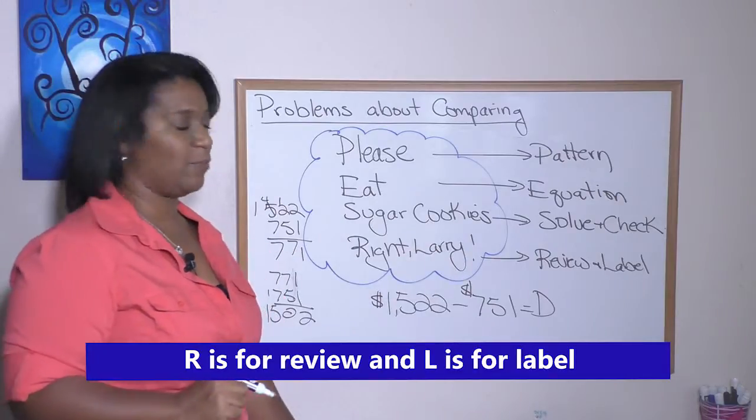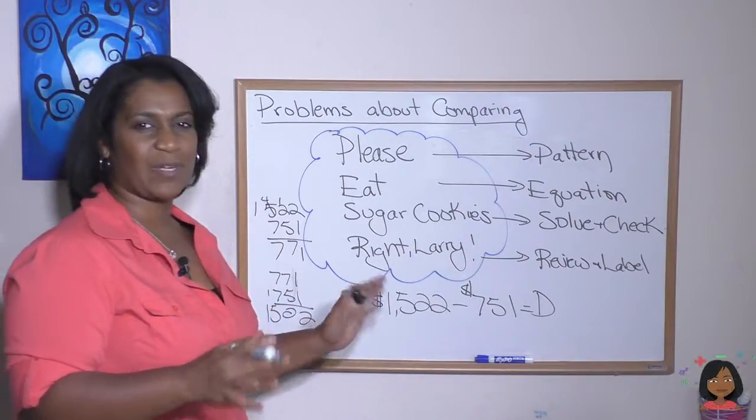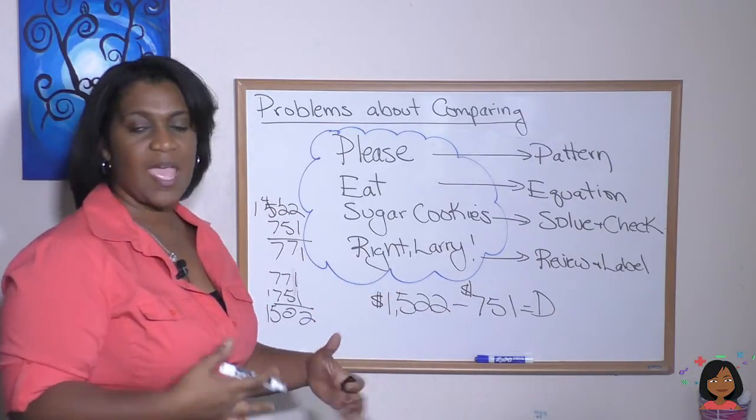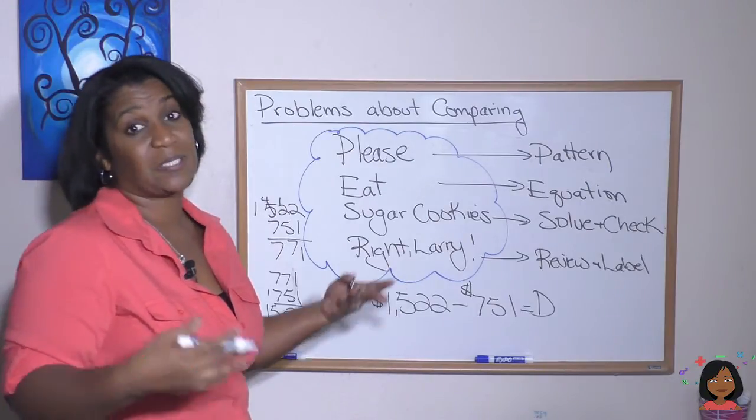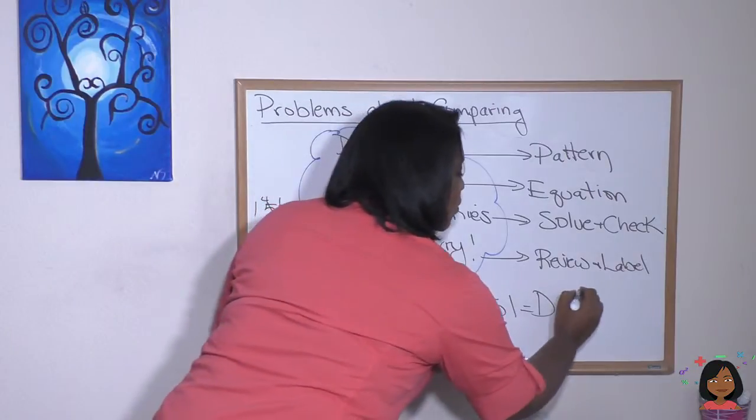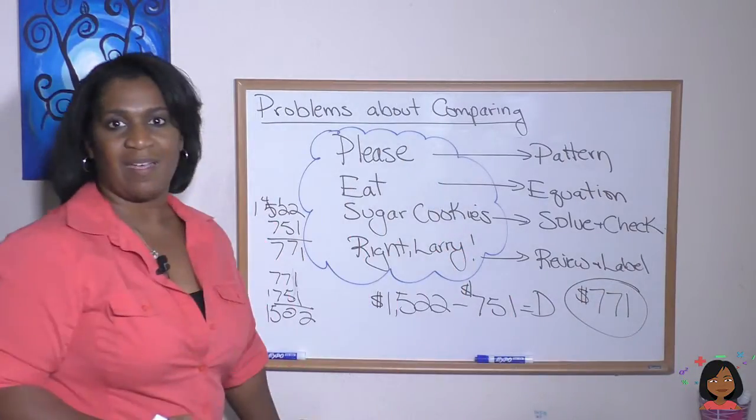Now we're going to review and label. Does it make sense that she sold about $771 less? Yeah, because that's about half. That makes sense. And we're going to label. Well, what are they actually collecting? They collected money. So our number is $771 is the label. And that's our answer.